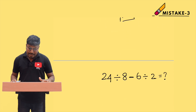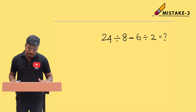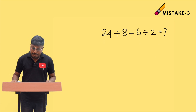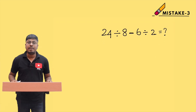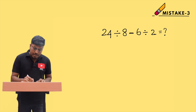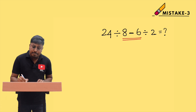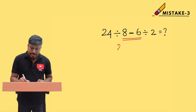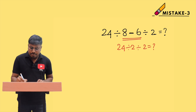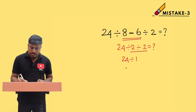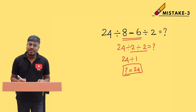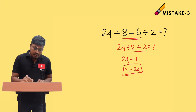Here is another example: 24 ÷ 8 − 6 ÷ 2 = ? The main mistake most students make here is subtracting 8 − 6 first, rewriting it as 24 ÷ 2 ÷ 2, and then dividing to get 24 ÷ 1 = 24. Don't do this — it is the wrong way to solve the question.